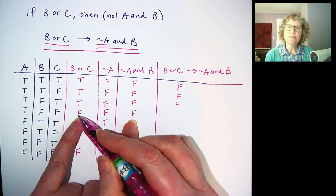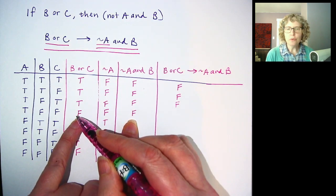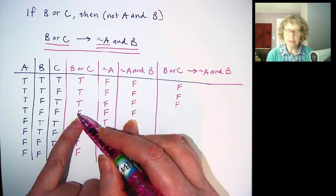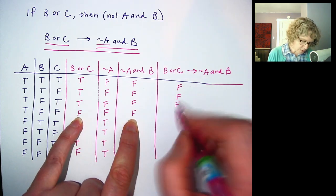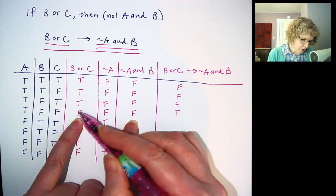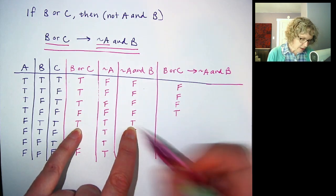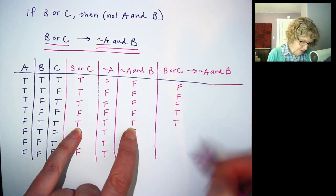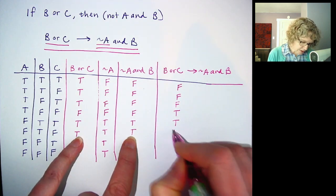Again, if you don't get elected, if the if part isn't true, we can't say anything about this because you didn't say anything about it if you didn't get elected. So we say that those are true. If the if part is false, then it's true no matter what. If you get elected and you do meet your campaign promise, that's great. That's true.